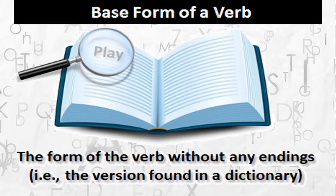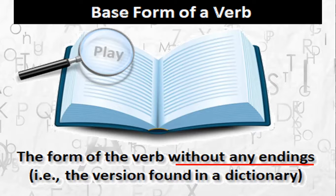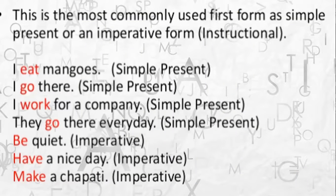Let us start at the beginning and understand the meaning of the base form of a verb. The form of a verb without any endings is called the base form. For example, P-L-A-Y, 'play.' This base form is the version of the verb you will find in a dictionary. When you search for a verb in a dictionary, you will find 'play' and then see its various versions — not 'playing' or 'played.' The base form is a verb without any endings.